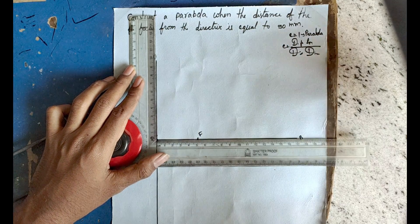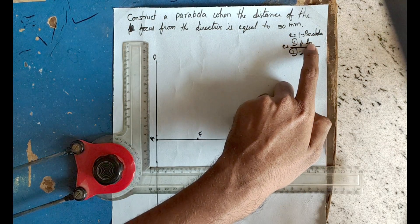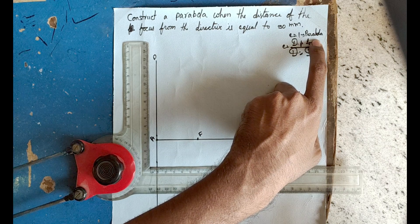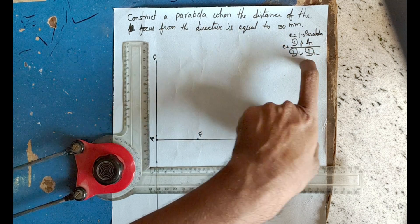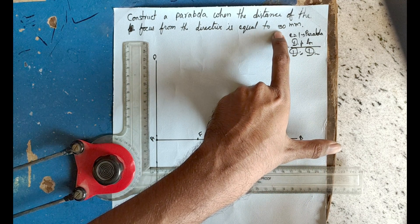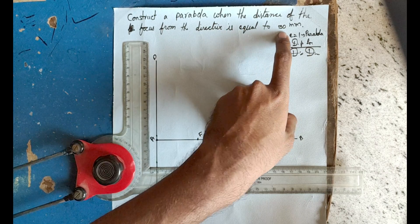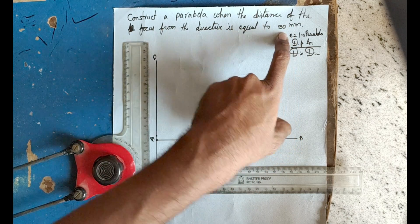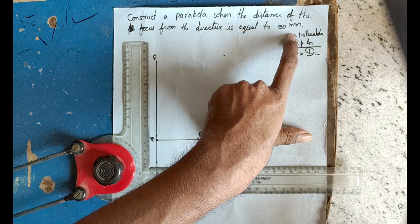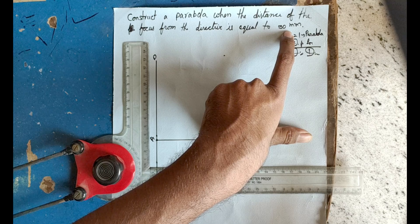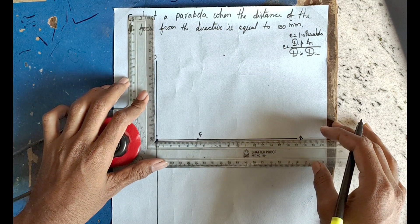Label this point as focus F1. Next, since eccentricity must equal 1, the upper portion must equal the lower portion. So divide the 50 mm distance by 2: 50 divided by 2 equals 25. Mark the point at 25 mm from the directrix.